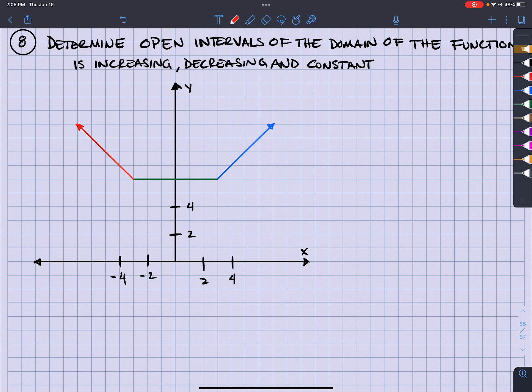So decreasing is going to be on the open interval from negative infinity all the way to negative 3. Constant is going to be from negative 3 to positive 3. And increasing is going to be from 3 to infinity.